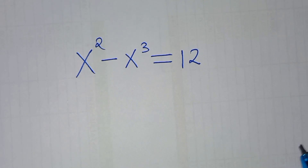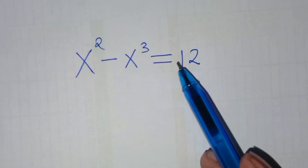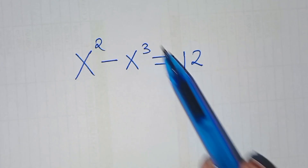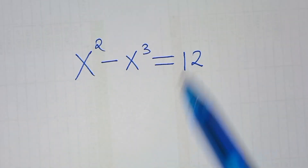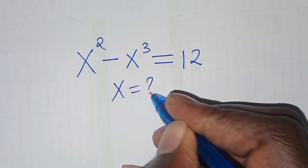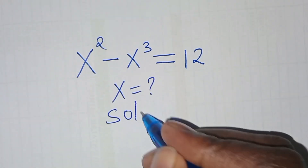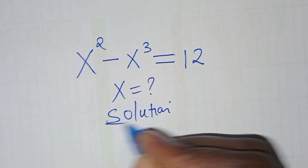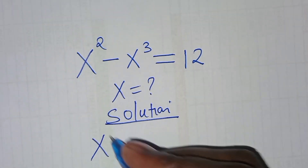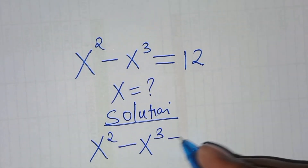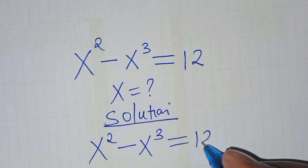Hello everyone, you are welcome to solve this nice algebra problem, which is x to power 2 subtract x to power 3, this is equal to 12. So what is the value of x? From here we have x to power 2 subtract x to power 3, this is equal to 12.